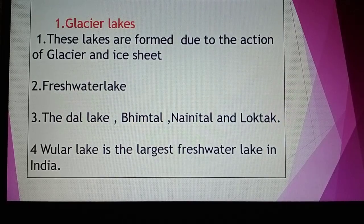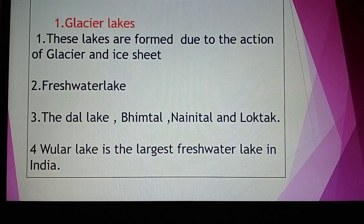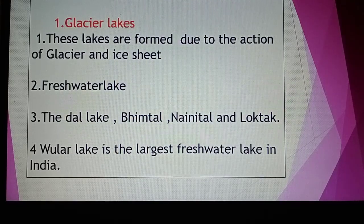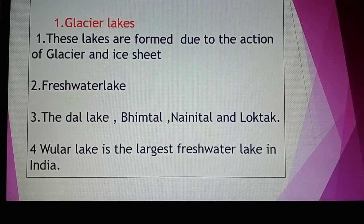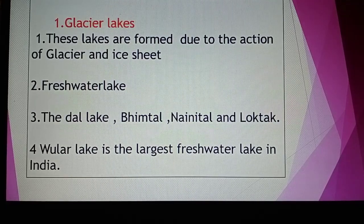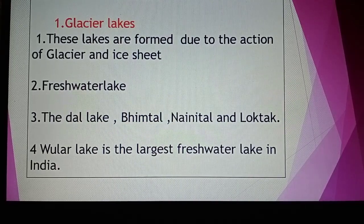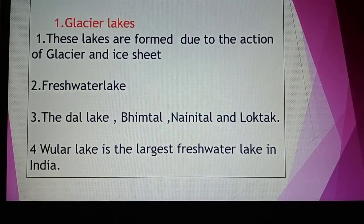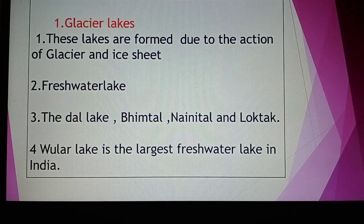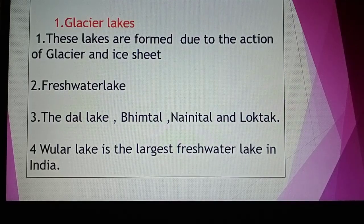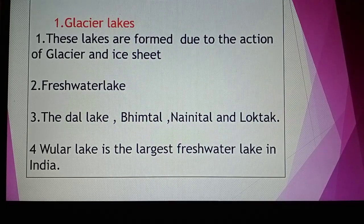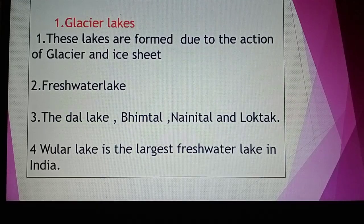Glacier lakes are formed due to the action of glaciers and ice sheets. When glaciers move and melt, the ice converts to water and lakes are formed in the land. These lakes are mostly freshwater lakes. Examples include Dal Lake, Bhimtal, Nainital and Loktak Lake — these are freshwater lakes that originate from glaciers and ice sheets.